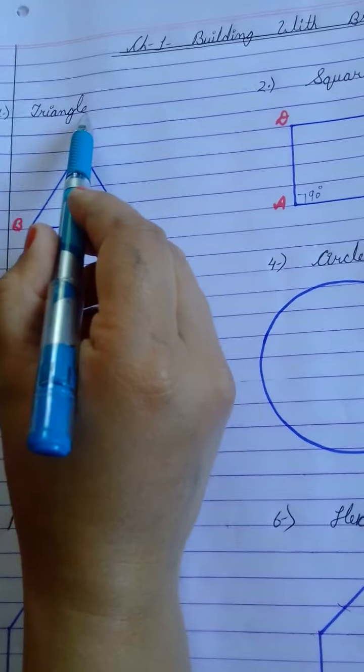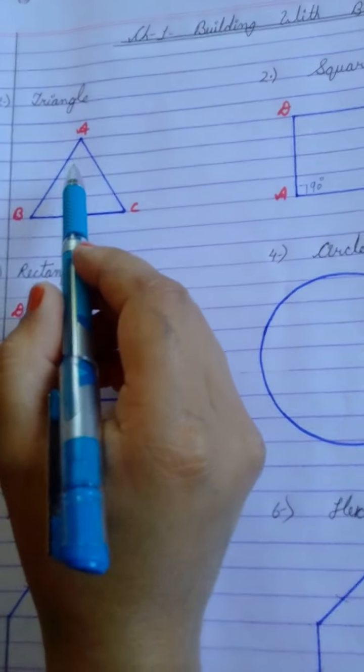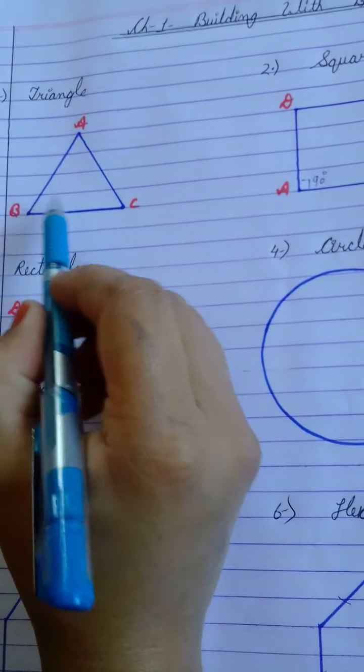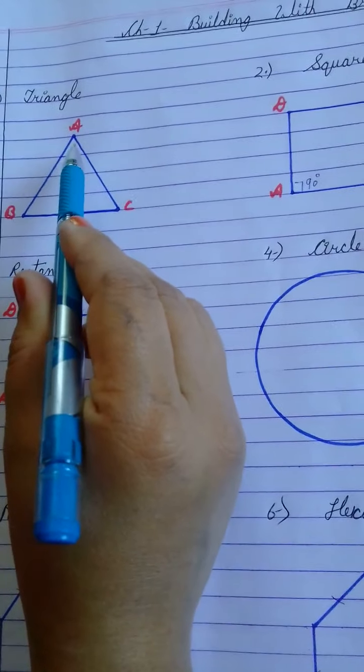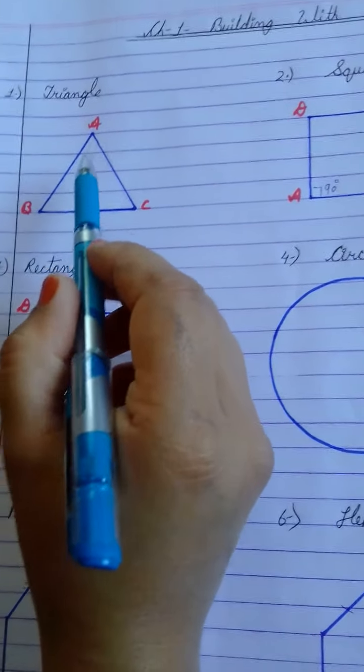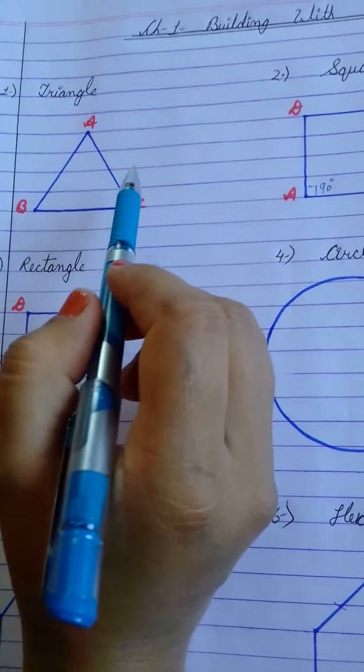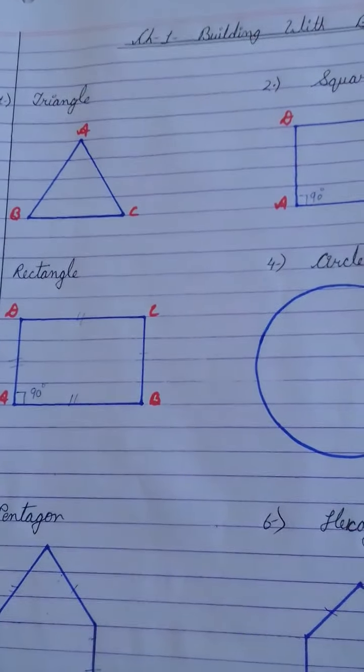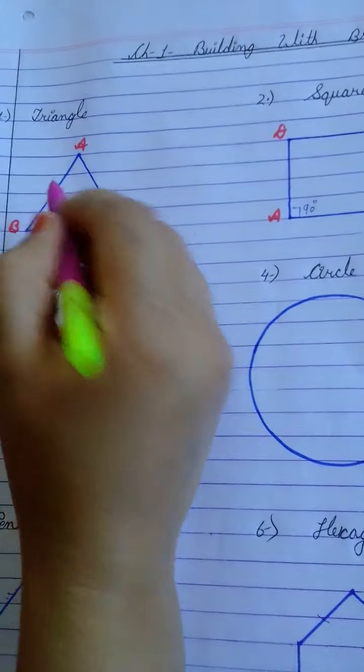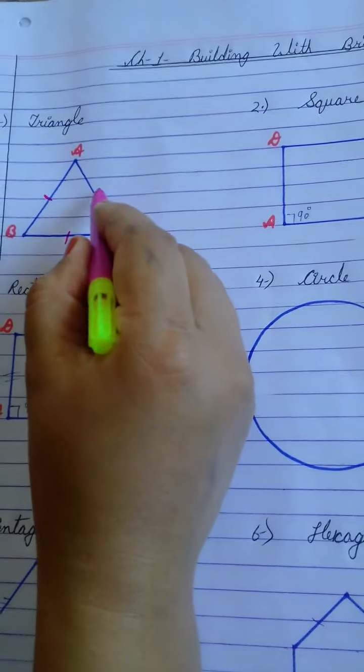Triangle. What is a triangle children? A closed figure having three sides is called a triangle. See here this is a triangle A, B, C. How many sides does it have? Three sides. A, B, B, C, and A, C.